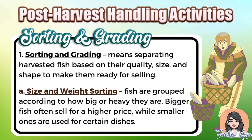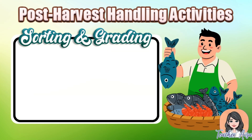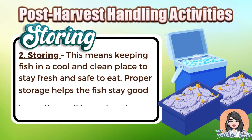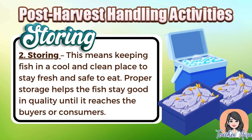Post-harvest handling activities include sorting and grading — separating harvested fish based on quality, size, and shape to prepare them for selling. Fish are grouped by size and weight, as bigger fish often sell for a higher price. Quality sorting involves checking color, texture, and overall appearance; damaged or discolored fish are removed to ensure only premium fish reach the market. Storing means keeping fish in a cool and clean place — in ice, freezers, or refrigerated containers — to slow bacterial growth and maintain the fish's texture, flavor, and safety.